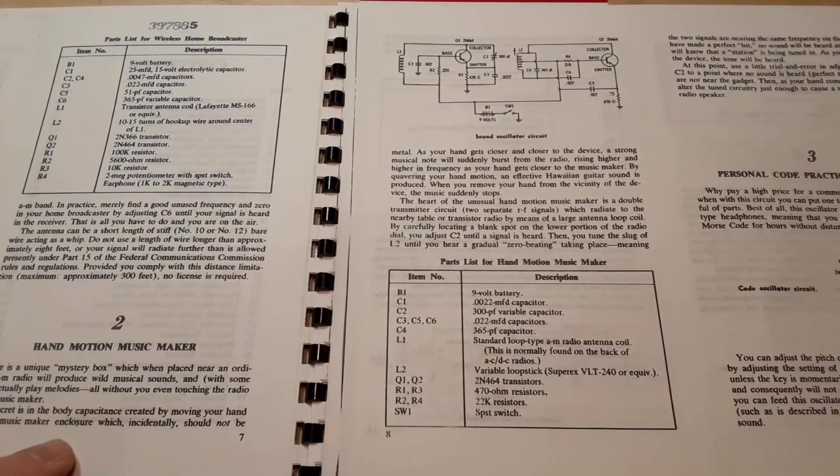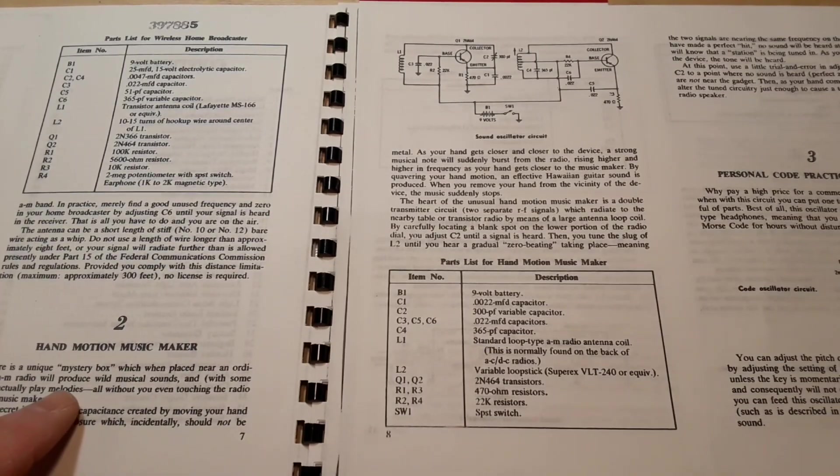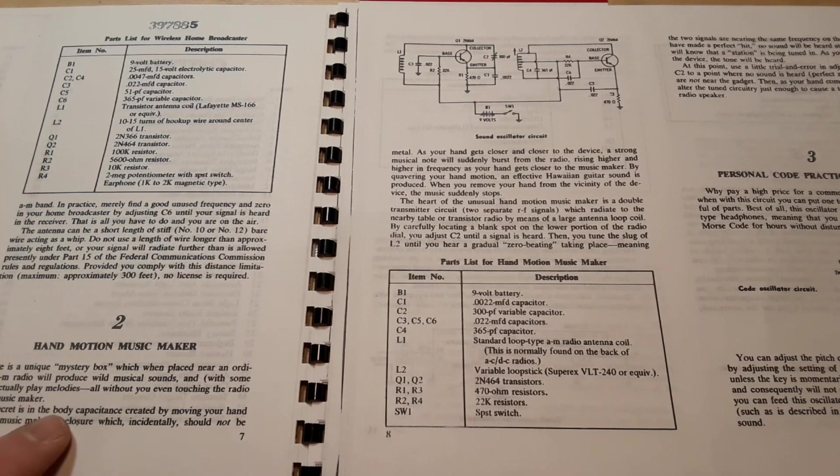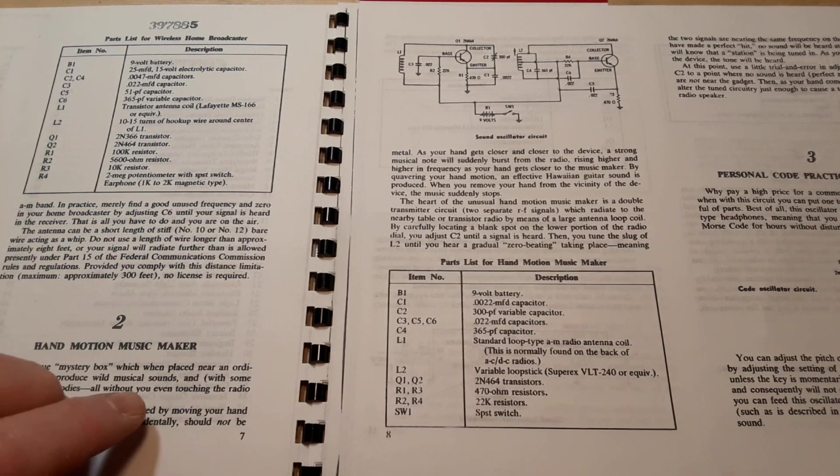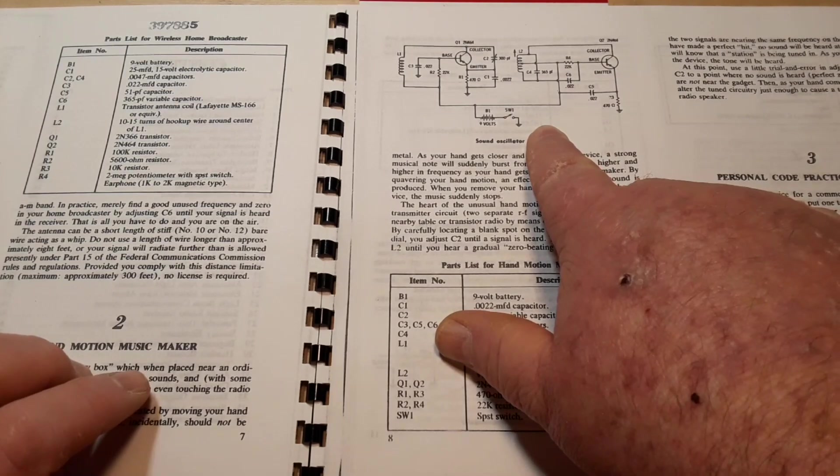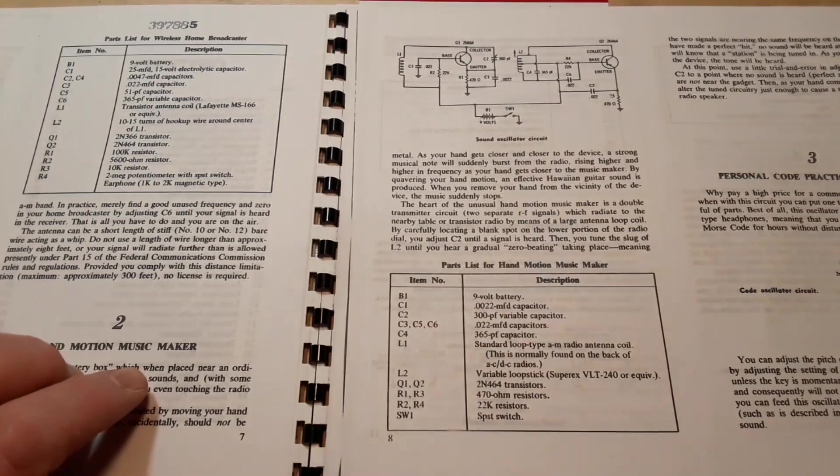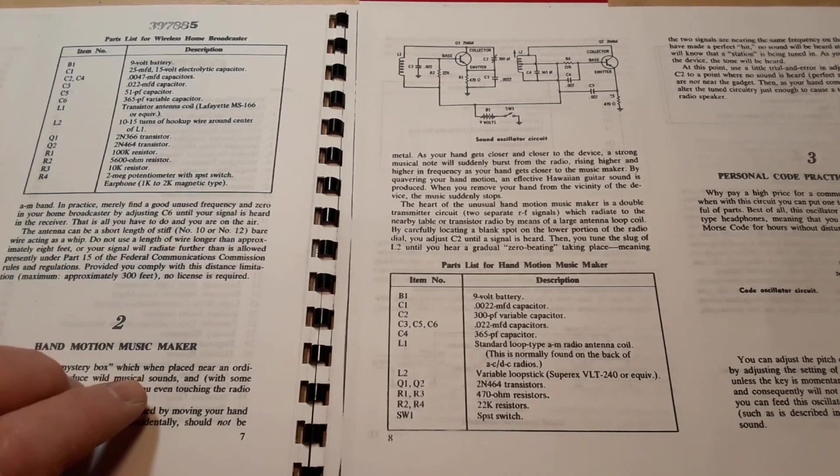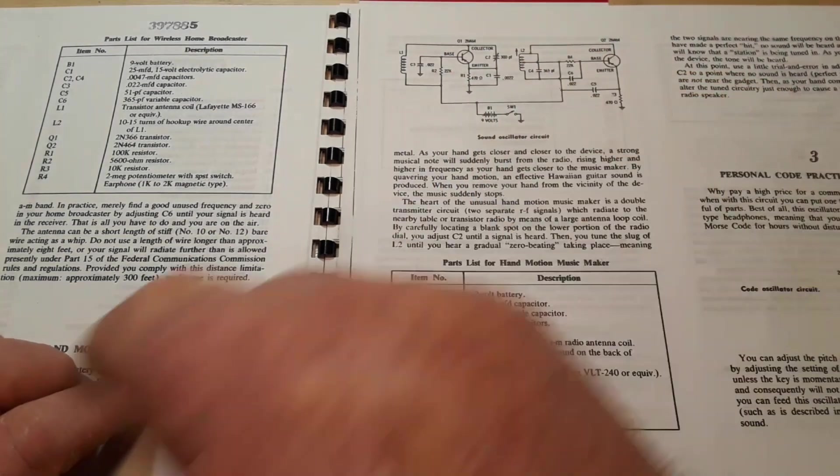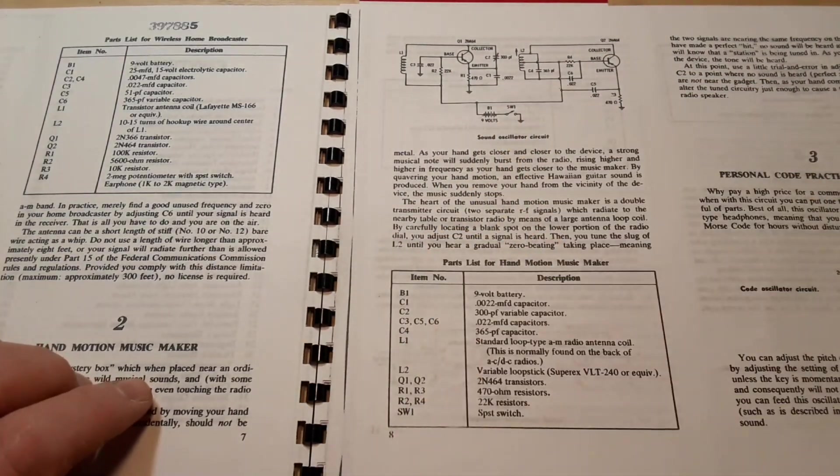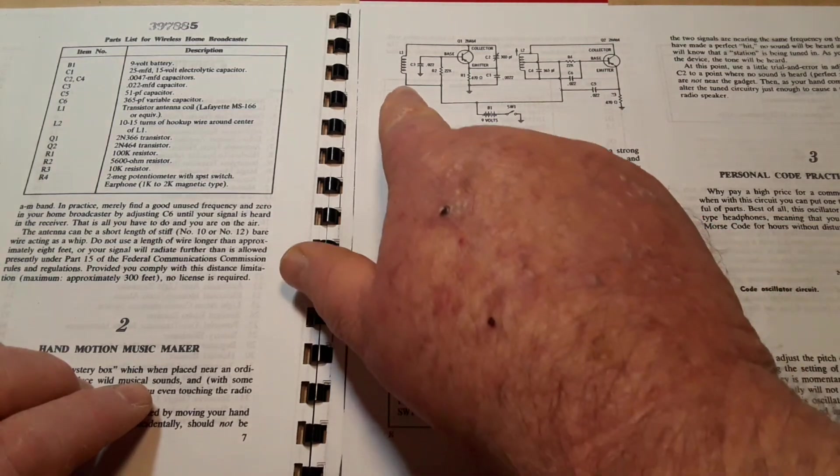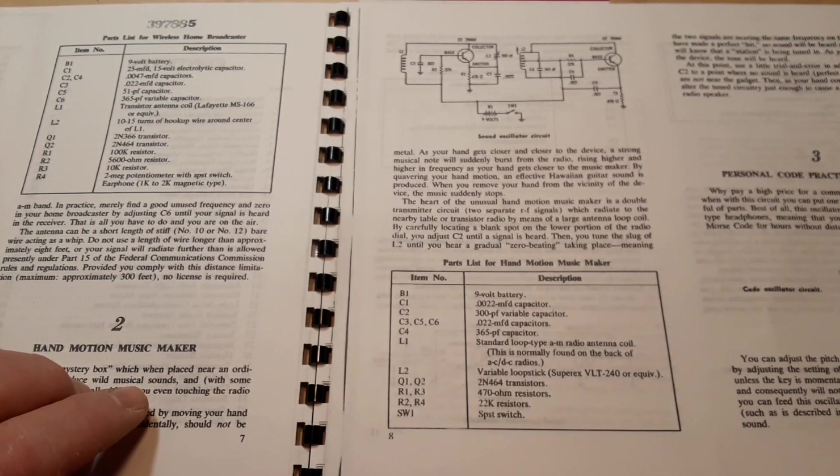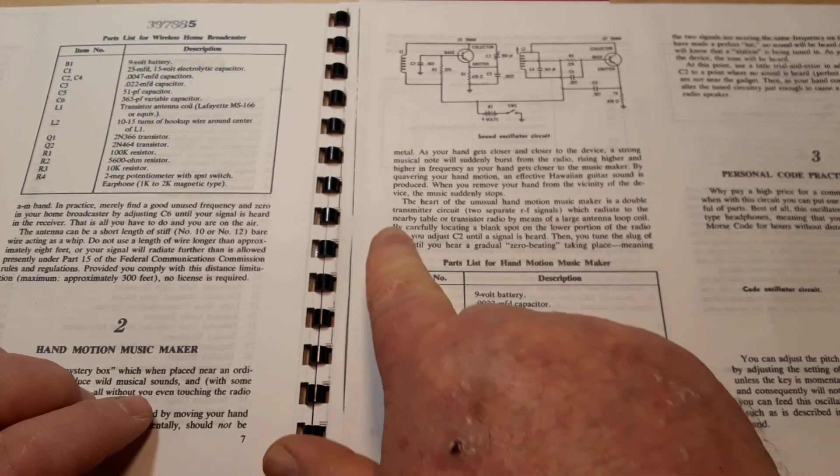We've got hand motion music maker. Here's a unique mystery box that, when placed near an ordinary AM radio, will produce musical sounds. The secret is in the body capacitance created by moving your hand near the music maker enclosure, which incidentally should not be metal. So basically, it's kind of a theremin. But instead of having a built-in speaker, it broadcasts it to an AM radio.